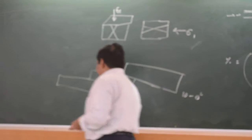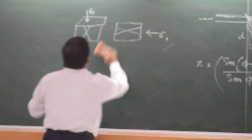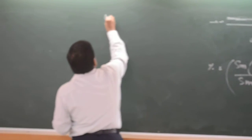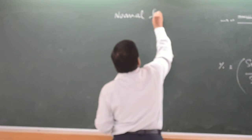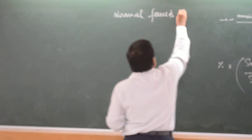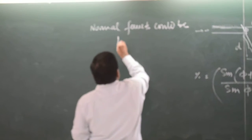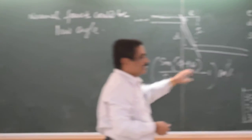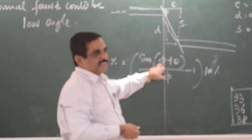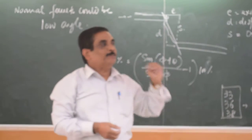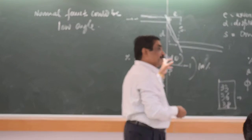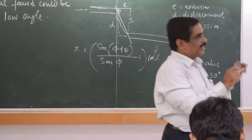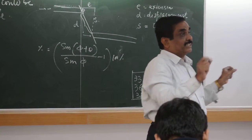So, normal faults will be low angle also. From this, depending on the area you are working, if you know the theta — the bedding plane dip — and if you know the fault plane dip, you can do a very good cross section. Low angle or high angle, all those things you can do. And how much extension has taken place, you can also calculate.